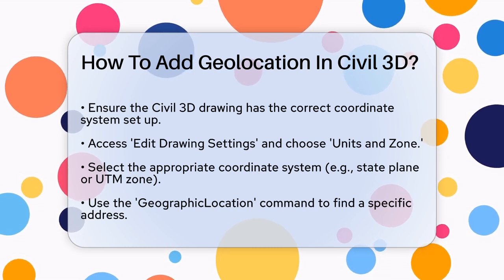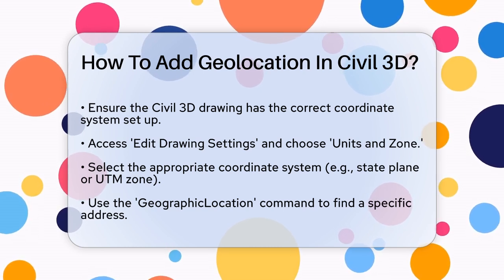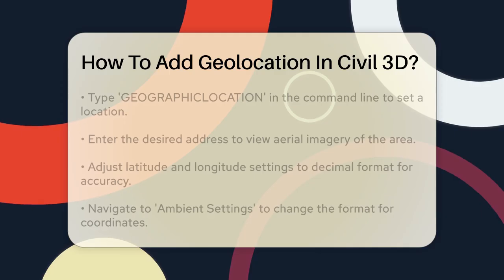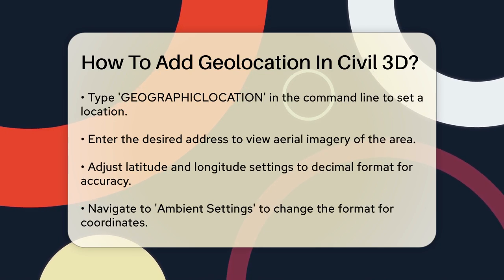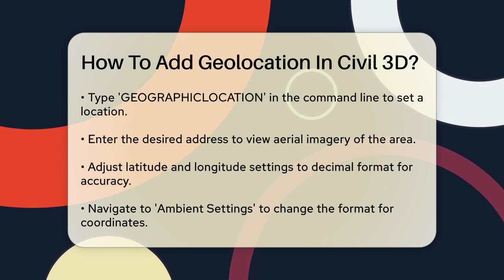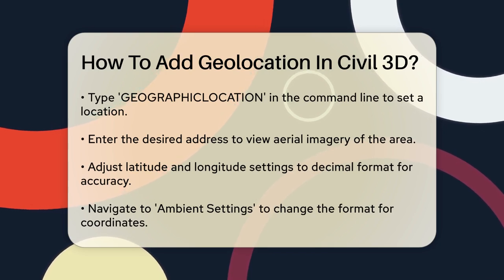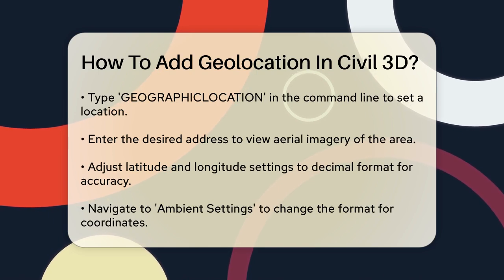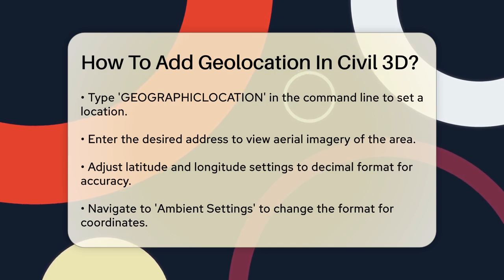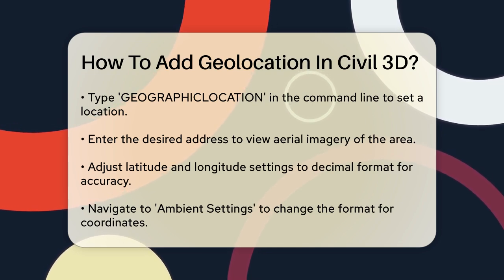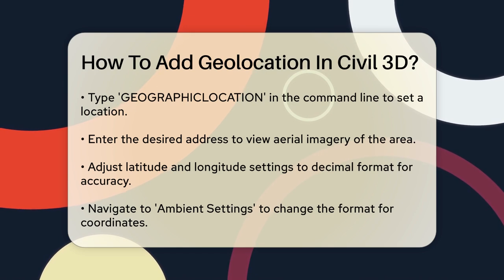Next, you might want to use the Geographic Location command to navigate to a specific address. Start by typing Geographic Location in the command line, which will prompt you to set a location for the map. Select Map and enter the address you want to locate. This will bring up an interface similar to Google Earth or Bing Maps, where you can see the aerial imagery of the area. To make sure the latitude and longitude are entered correctly, adjust the settings to use decimal format instead of degrees, minutes, and seconds.